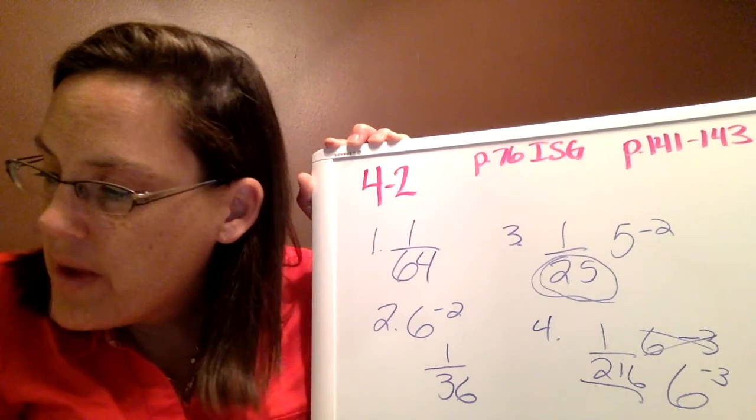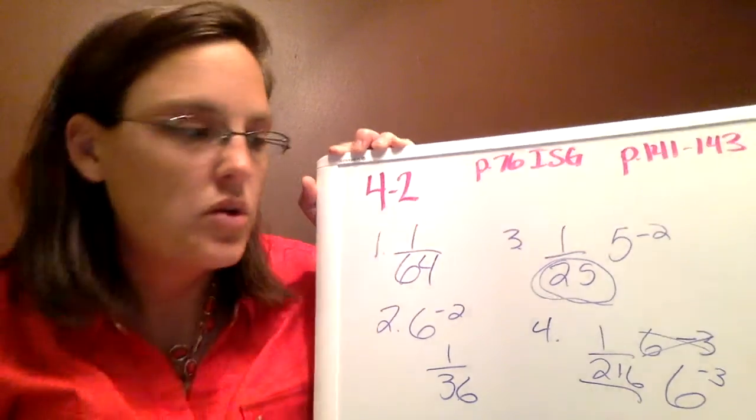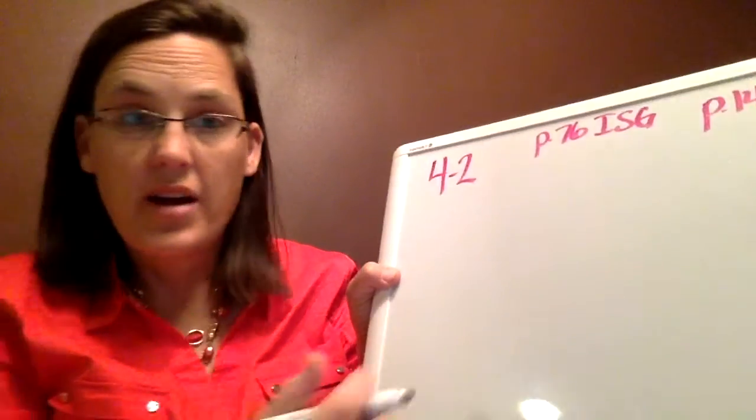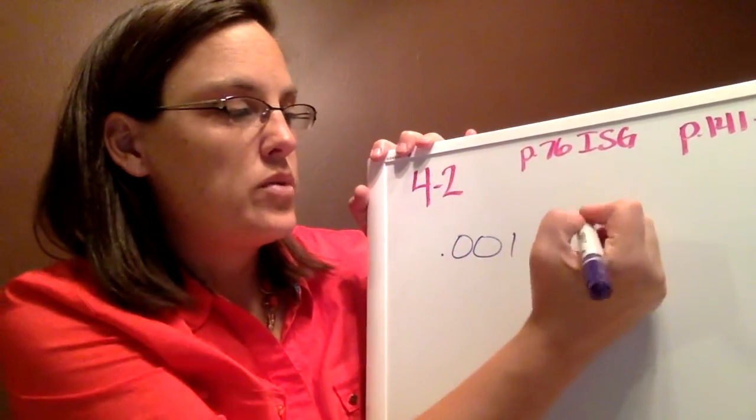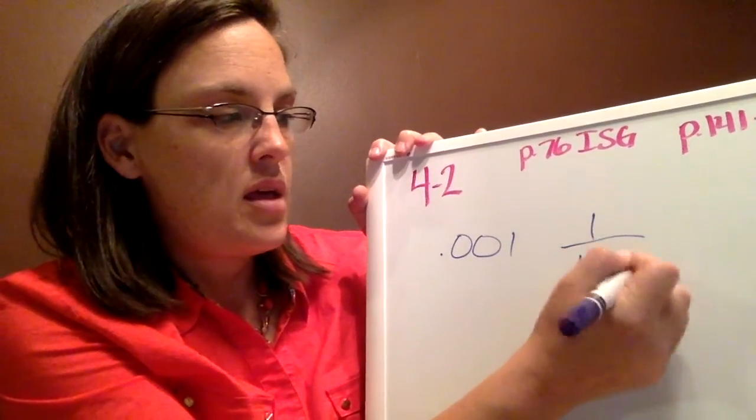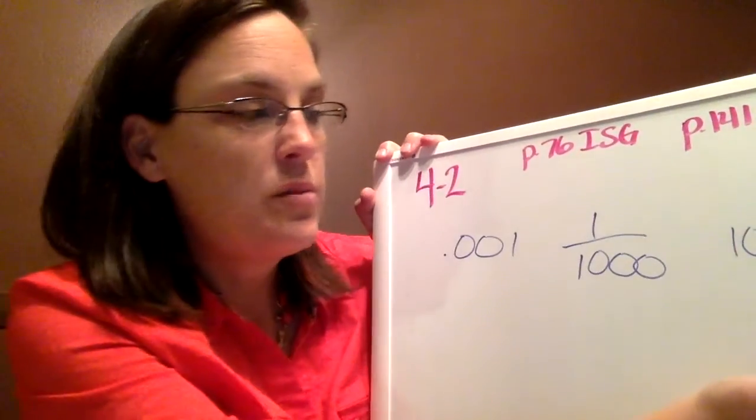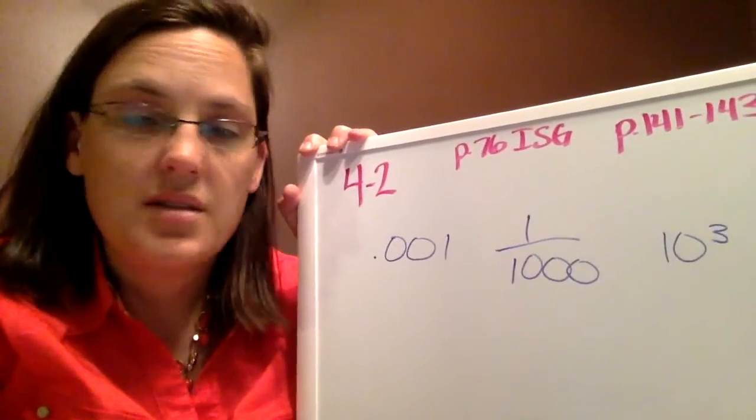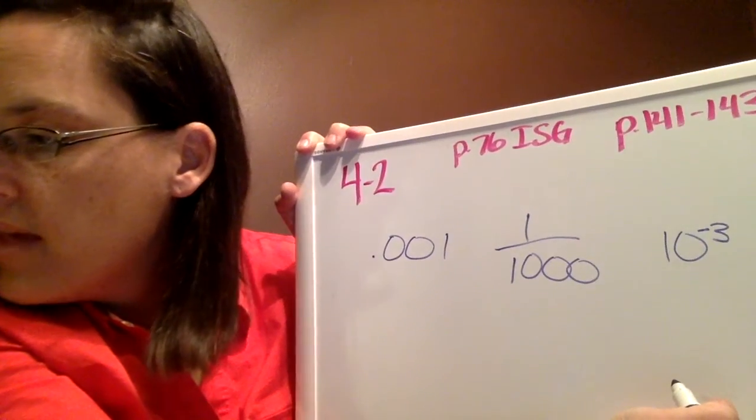For number 7, it says fill in the boxes to write 1 thousandth in three other ways. So 1 thousandth is 0.001, which you see right there on page 76. But another way we could write that is as a fraction. We know that rational numbers can be written as a ratio of two numbers. So 0.001 can be written as 1 over 1000. And we know that 1000 is also a power of 10. So 10 to the third power is 1000. But 10 to the negative third power would be 1 over 1000.